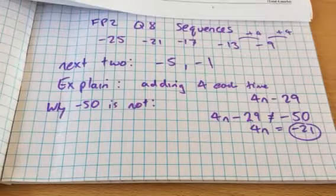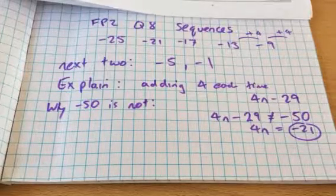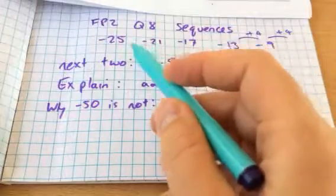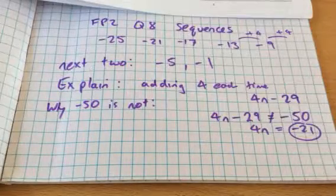But viewers, do comment below if you have a more succinct reason for that, or you could count backwards in 4s and see whether you get to 50 or not.